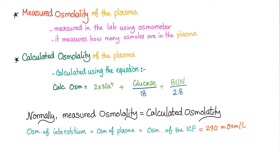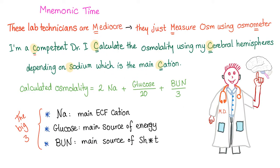There is a Trojan horse in your body. When we calculate osmolality using this equation, we depend on the big three. The biggest of the biggest is sodium, then glucose, then blood urea nitrogen. The main ECF cation, the main source of energy, the main source of waste. However, of those three, only two are effective — we call them effective osmolality. And one is ineffective, or useless, or garbage. Who do you think the BS is?